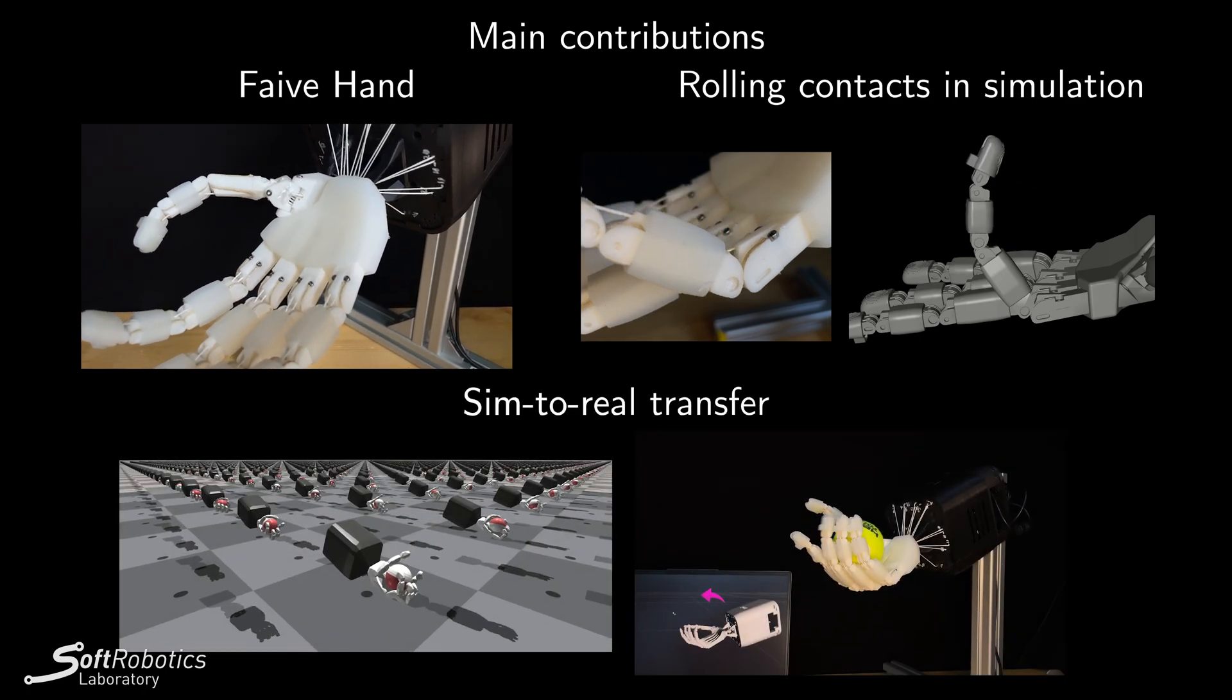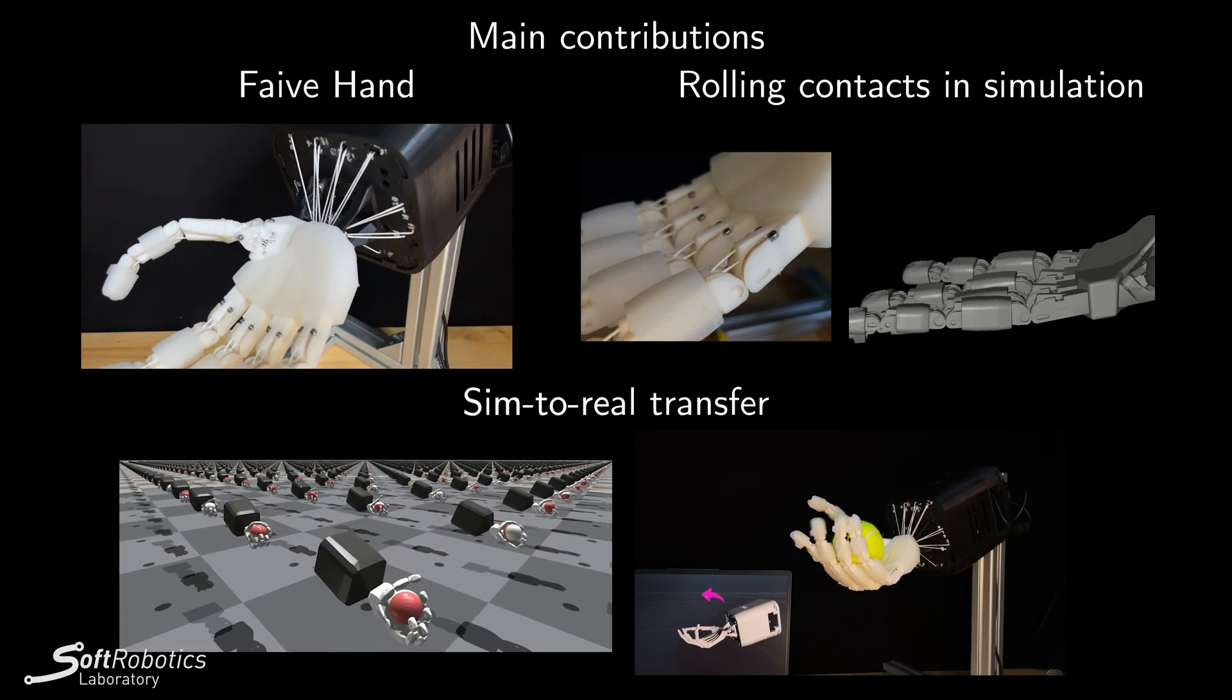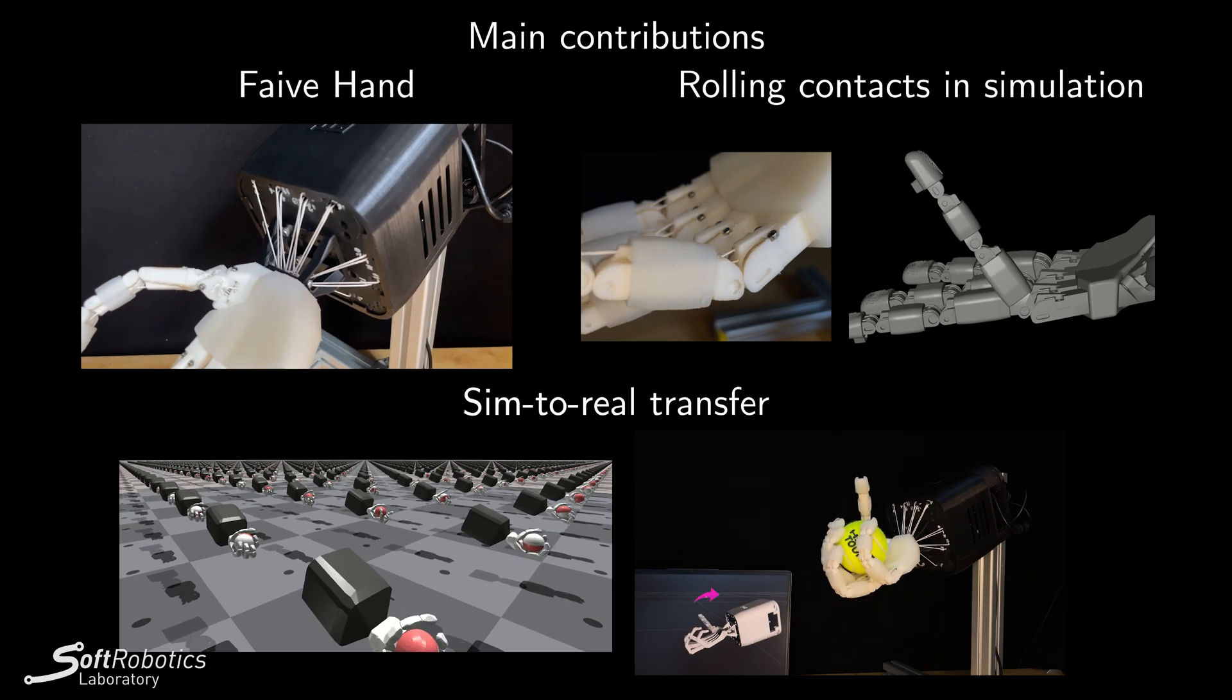Finally, we demonstrate that we can learn a closed-loop policy that can be run on a real dexterous robotic hand.